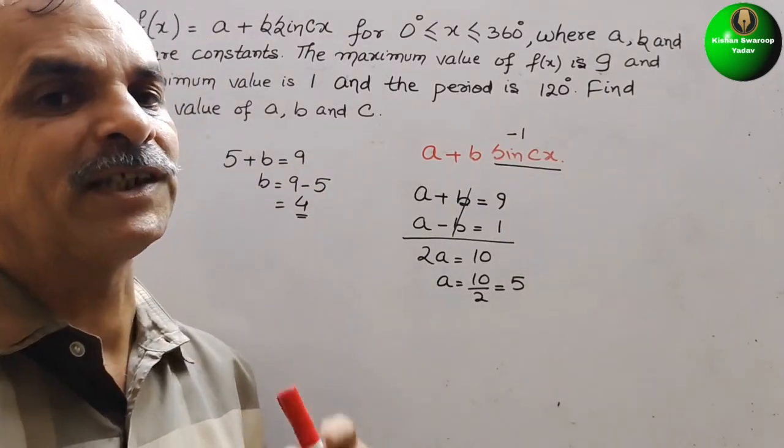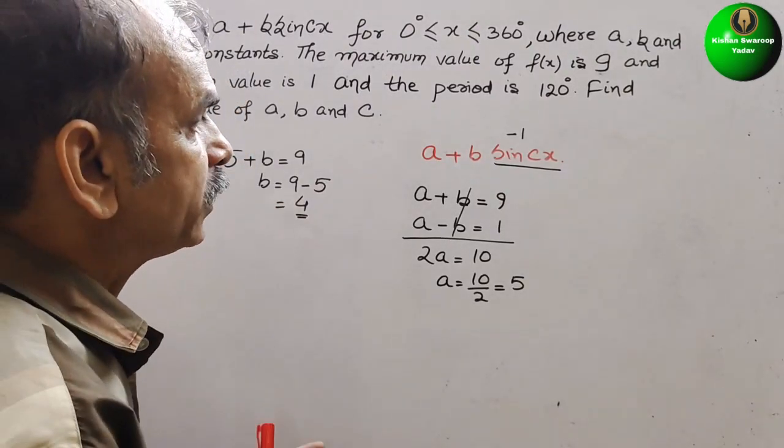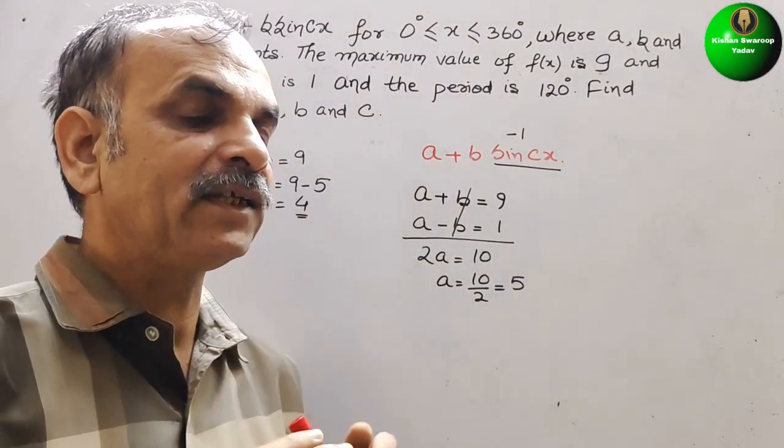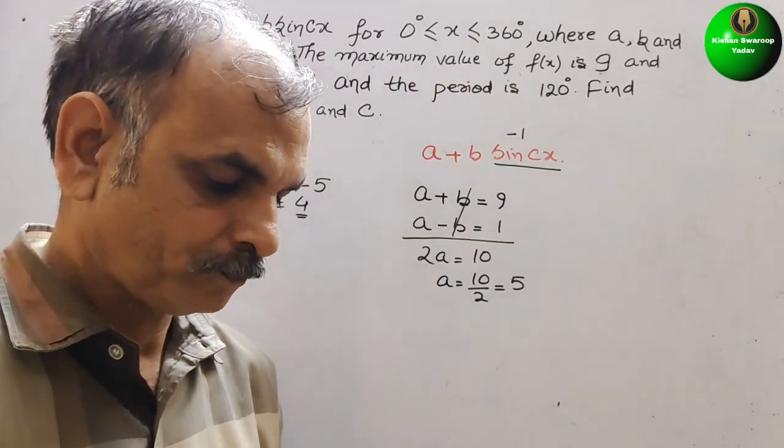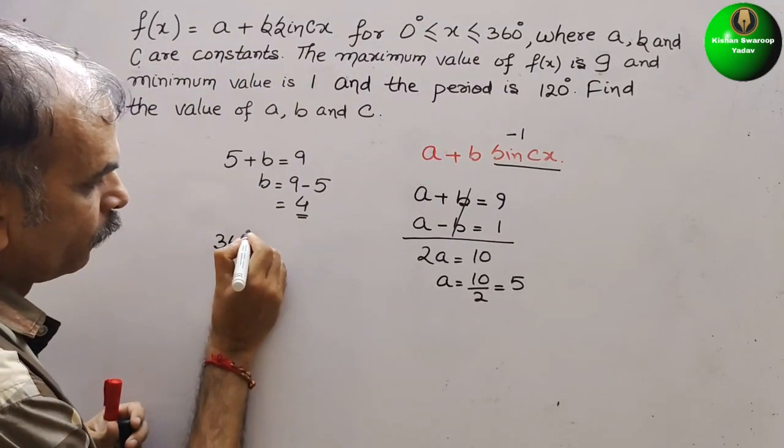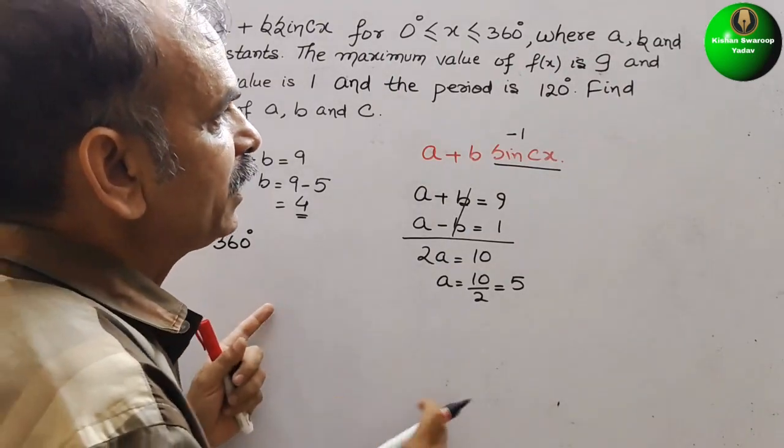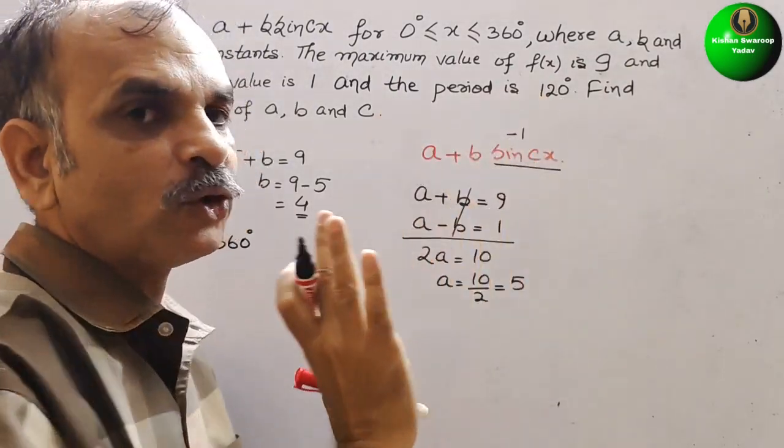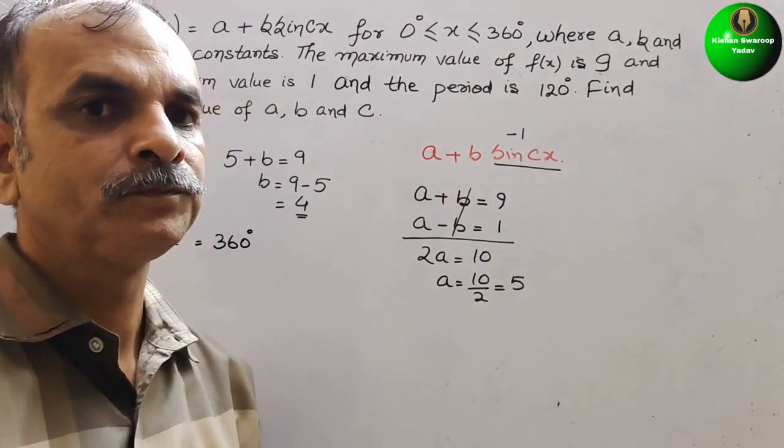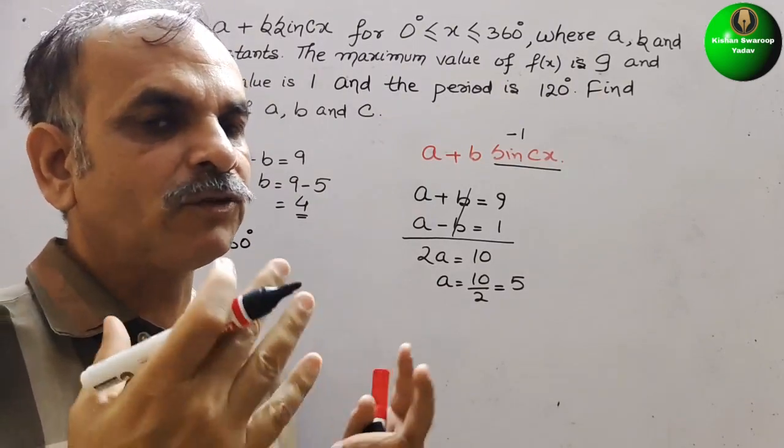Now we have to solve c. That is your sin(cx). We know that sine complete cycle is equal to 360 degrees. 360 degrees. That is your x. But here what they have given? They have given the period is 120 degrees. What they have done? Divided by 3. Then only we will get 120 degrees. 360 divided by 3 is 120.